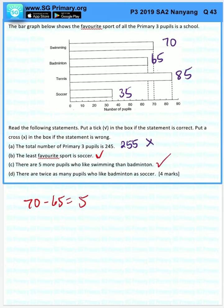There are twice as many people who like badminton than soccer. Soccer is 35, 35 times 2 is 70. Badminton only has 65, so this is false.